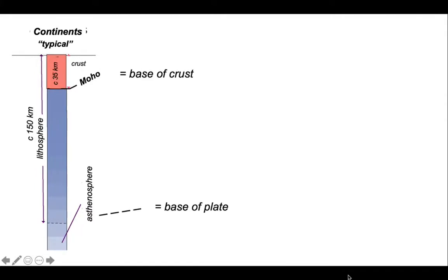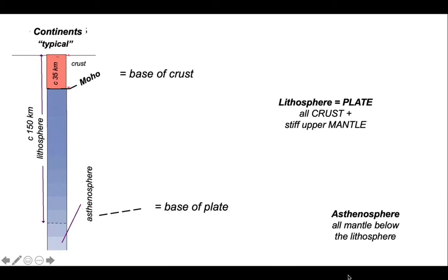So we have two boundaries here. One is the base of the crust; the other is the base of the plate. To be clear, the lithosphere — a plate — consists of all of the crust and the upper mantle that is stiff. The asthenosphere is all the mantle that exists below the lithosphere.